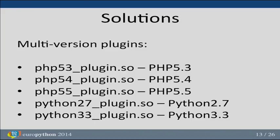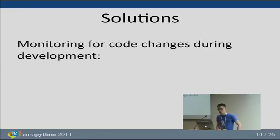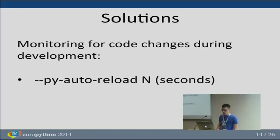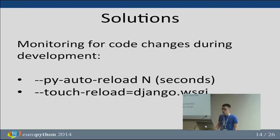Remember that 100-plus-line Python script used in mod_wsgi to monitor code changes and reload the daemon process? UWSGI has just a simple option: you specify how many seconds you want UWSGI to scan for code changes and it reloads everything automatically. There is also a touch-reload option if you need it. No more custom homemade scripts that you have to search for and include in your projects.